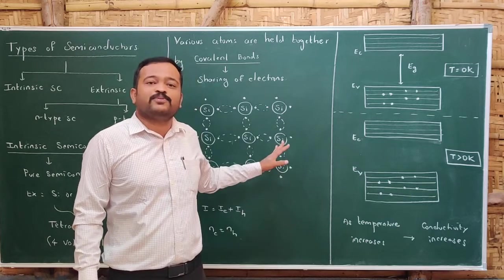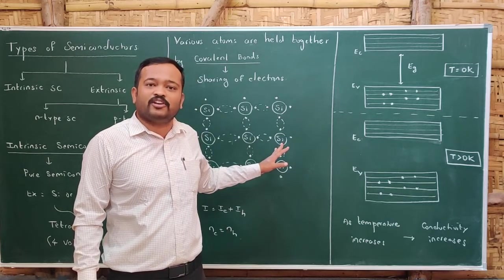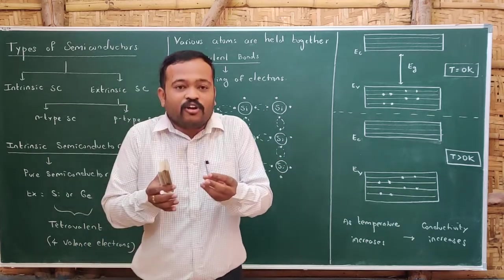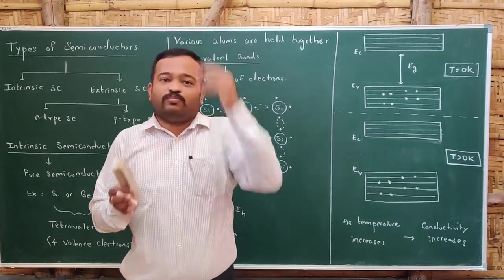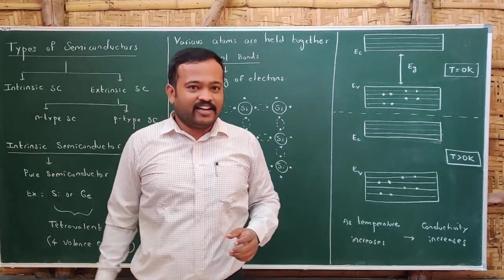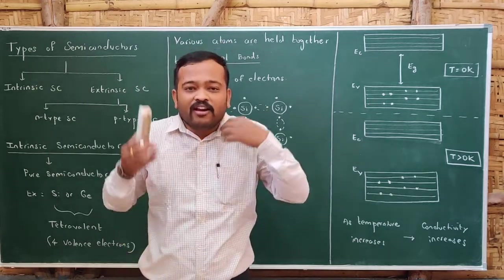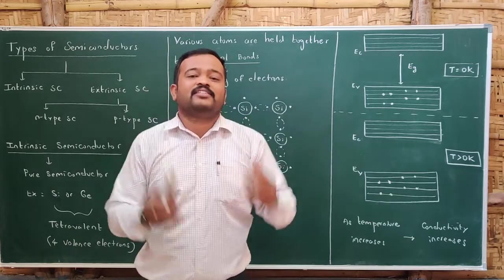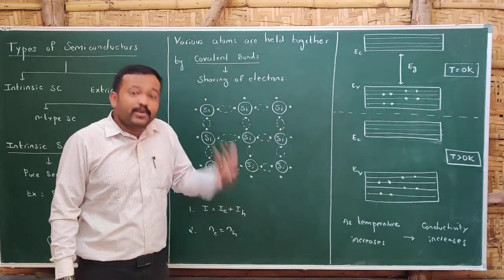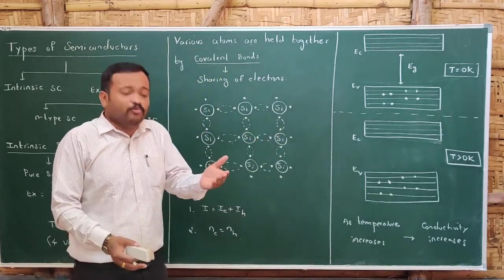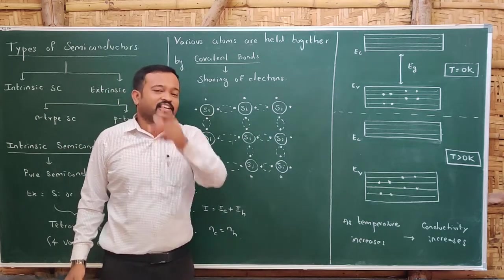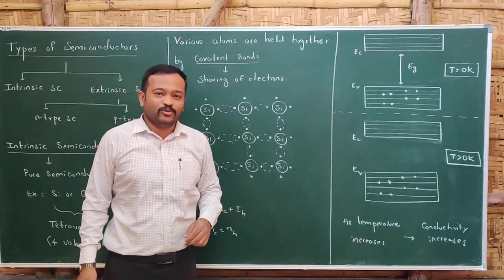Are these bonding electrons responsible for the conduction of current? No. The electron which becomes free is responsible for the conduction of current. Our idea is we need to make these electrons free and move them so that we get a current. Let us check out how to do that.